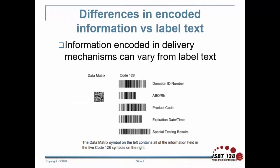The delivery mechanism is the means by which the information is represented in a machine-readable manner. 2D data matrix and Code 128 barcodes are delivery mechanisms routinely used in the ISBT-128 standard to convey ISBT-128 data structures.